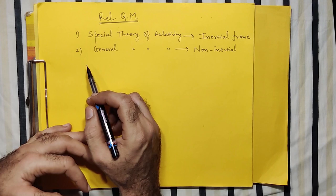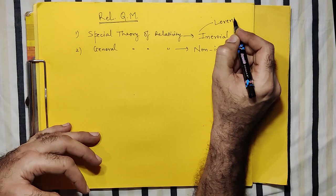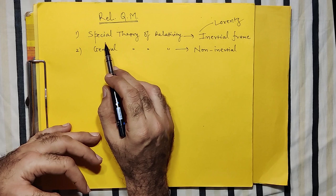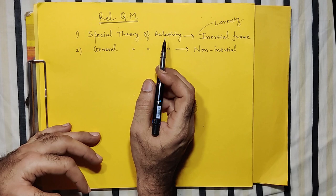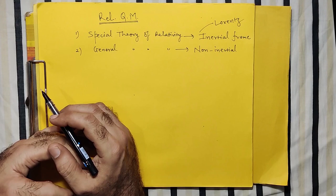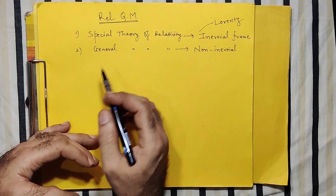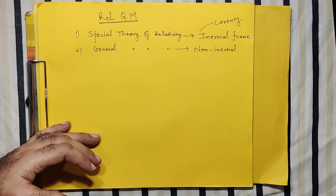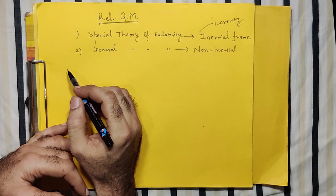This inertial frame of reference is also known as the Lorentz frame of reference, because when you apply the special theory of relativity, the Lorentz transformation remains invariant. This invariance property is the important aspect whenever we consider the theory of relativity. These are the two aspects — special theory of relativity and general theory of relativity — which were put forward by Einstein, that we now try to couple with quantum mechanics.